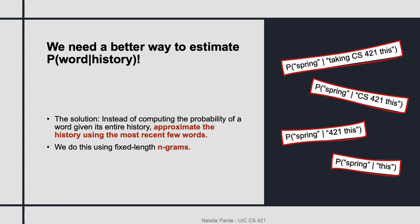So because of these potential issues, we want to avoid computing the probability of a word given its entire history and instead approximate that history using just the most recent few words. We do this using fixed length n-grams. For example, we might consider the most recent two or three words.